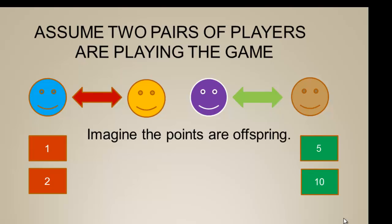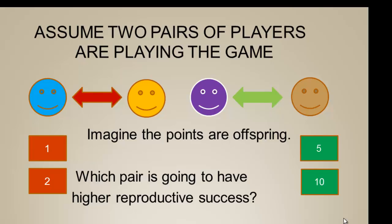And again, if we imagine those points are offspring, it's easy to see that the cooperative pair is going to have higher reproductive success.